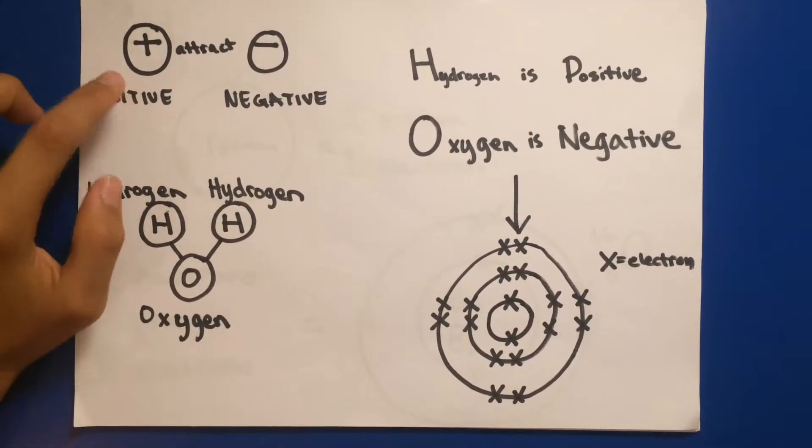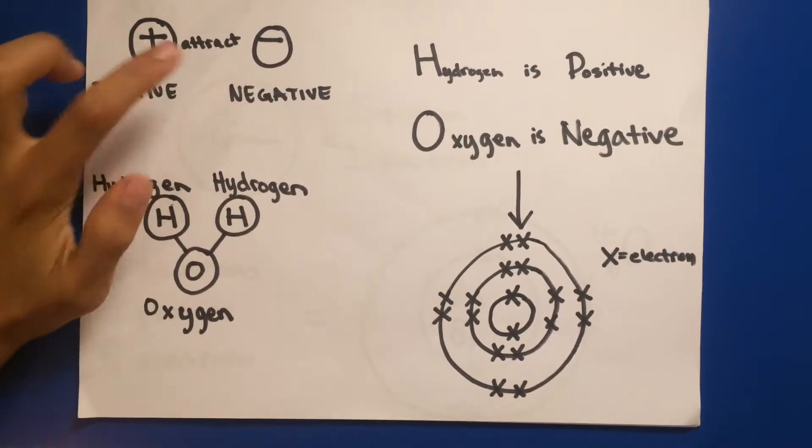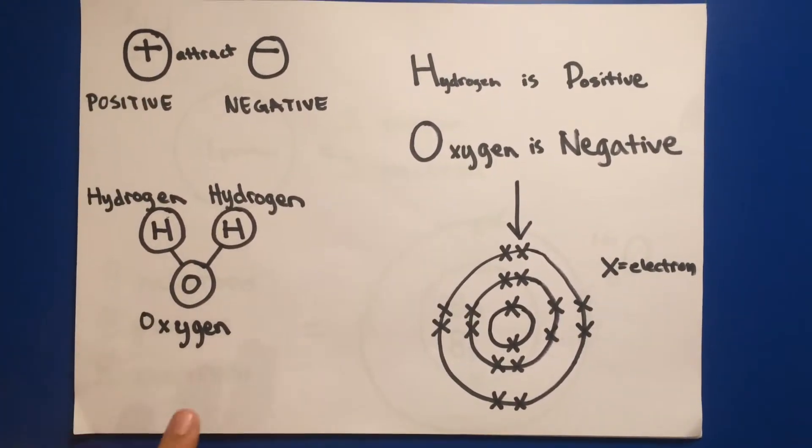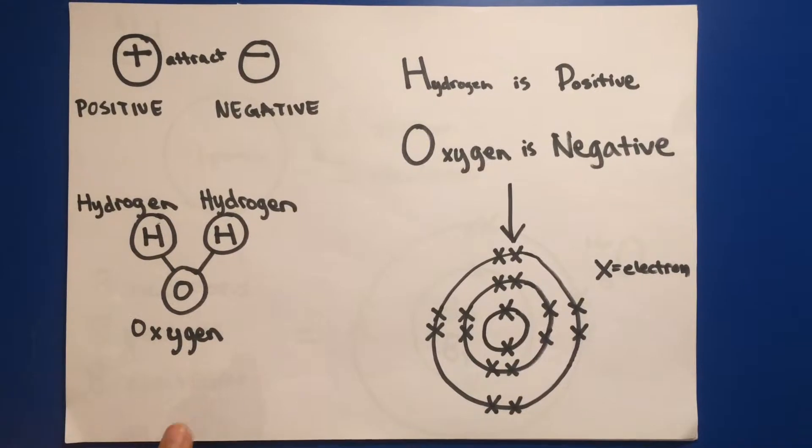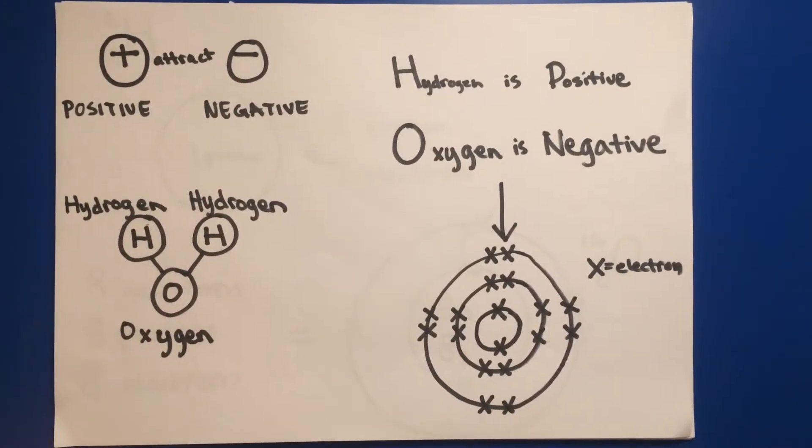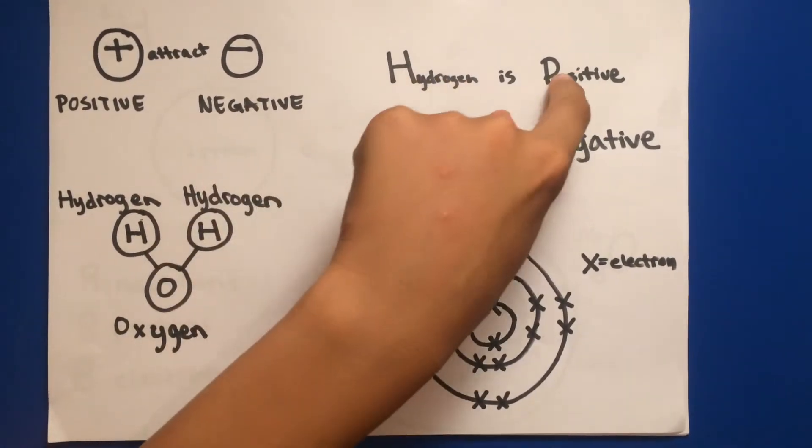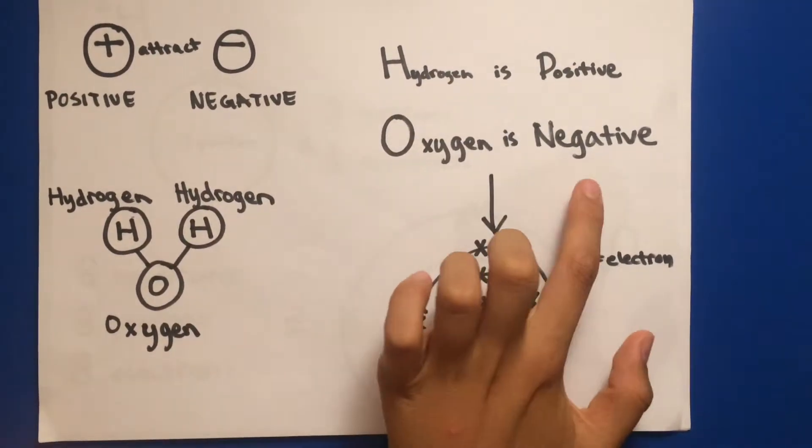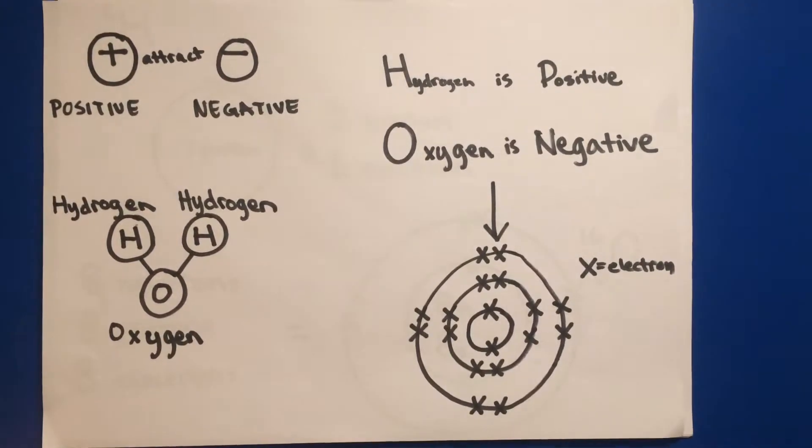We all know that positive and negative charges attract. We also know that water is made up of two hydrogen atoms and one oxygen atom. But what you might not know is that hydrogen is positively charged and oxygen is negatively charged.